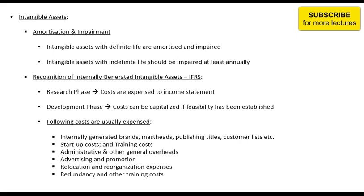For example, you create licensed software of your own, or create a brand of your own, or any other asset that does not have physical existence. For the first two methods — acquisition and purchase — you know the price you paid and you can record it at that value on your balance sheet. If you purchase it, you would have paid a price for it, so you know that value and can record it.